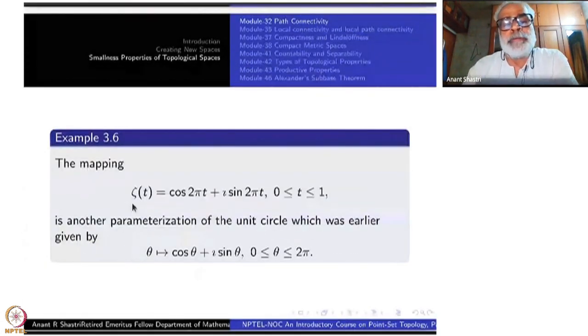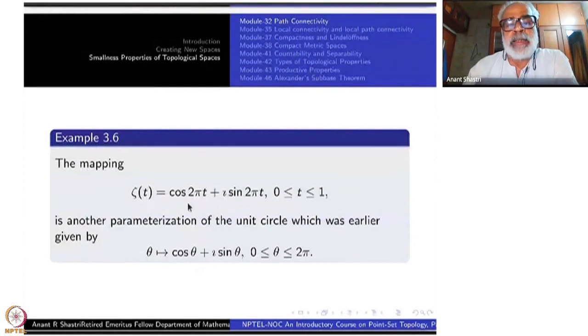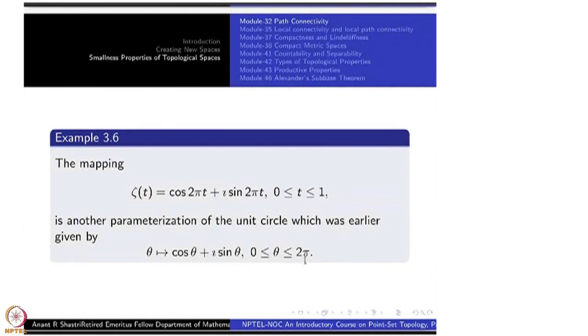Here are examples. The mapping zeta t equals cos 2 pi t plus i sine 2 pi t, which can be written as exponential, 0 less than t less than or equal to 1, is another parameterization of the unit circle. Earlier theta going to cos theta plus i sine theta but the interval was 0 to 2 pi. From here to here you take multiplication by 2 pi and follow it then you get this one.